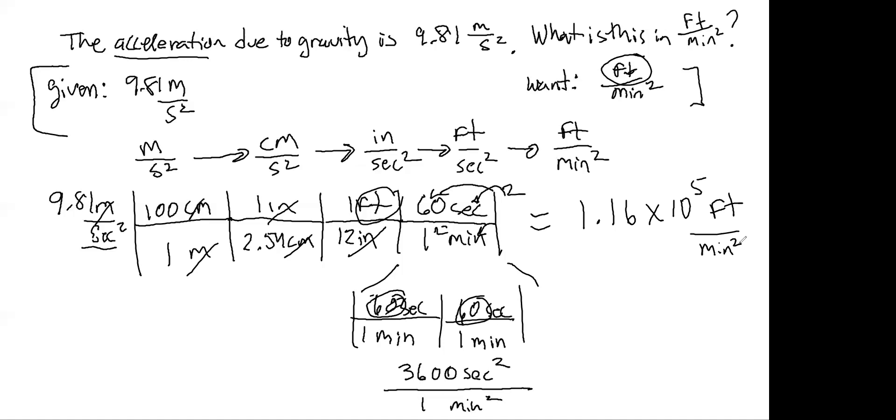And it has the correct sig figs because we're going to be using the numbers in the problem, not in any of the conversion factors that we bring in to solve the problem. And 9.81 has three sig figs. And so does my final answer here.